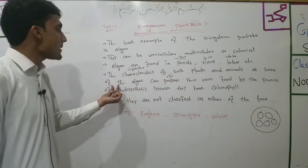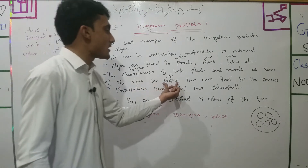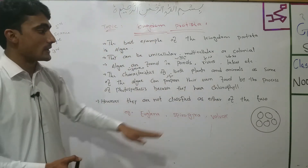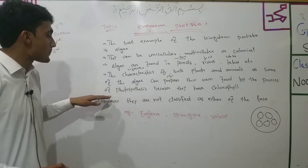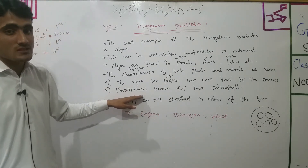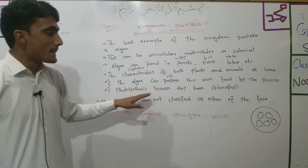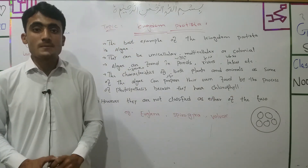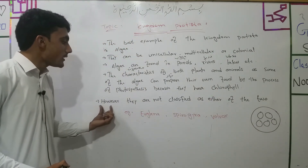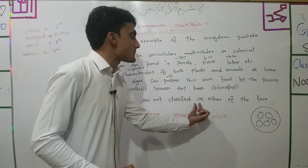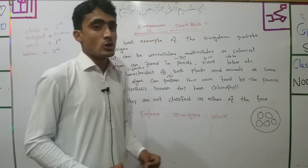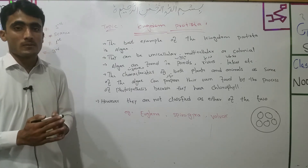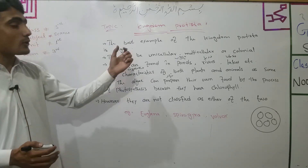Some of the algae can prepare their own food by the process of photosynthesis because they have chlorophyll. However, they are not classified as either plants or animals. We don't divide them as plants or animals — they have their own kingdom.